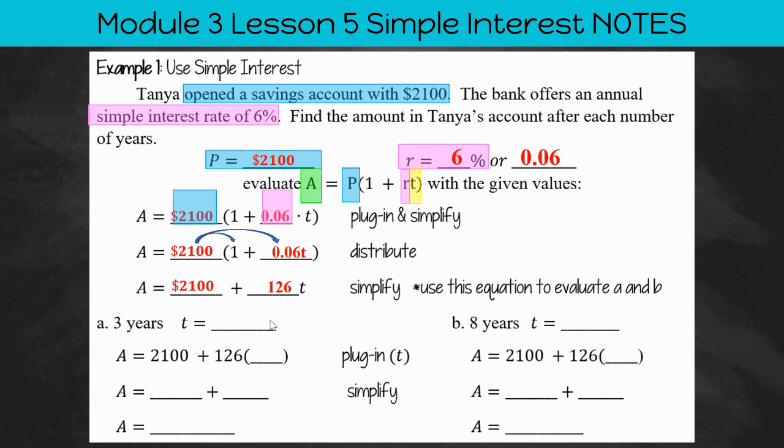Please note that one term has a variable, the T, and the other term does not have a variable. So that's why we cannot combine those two terms.